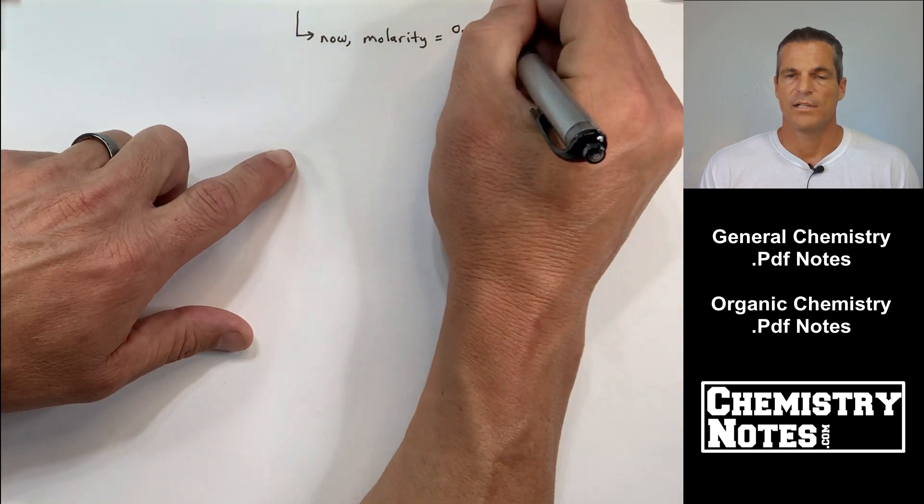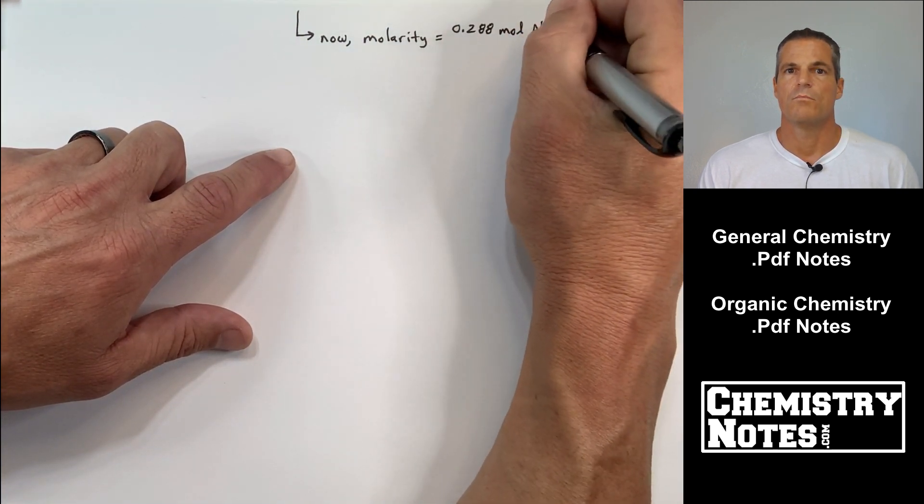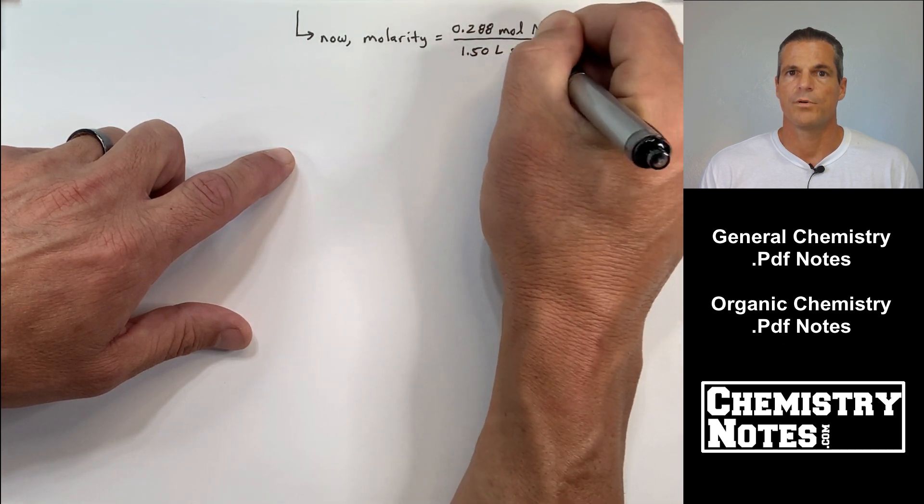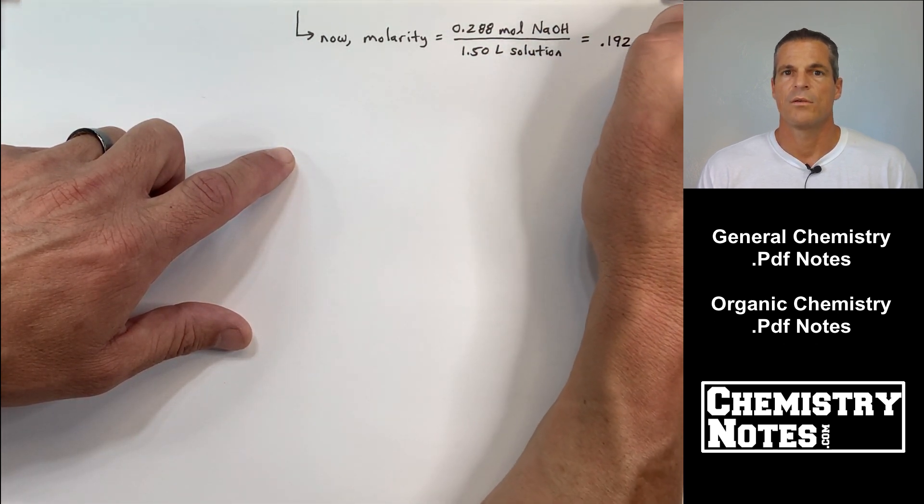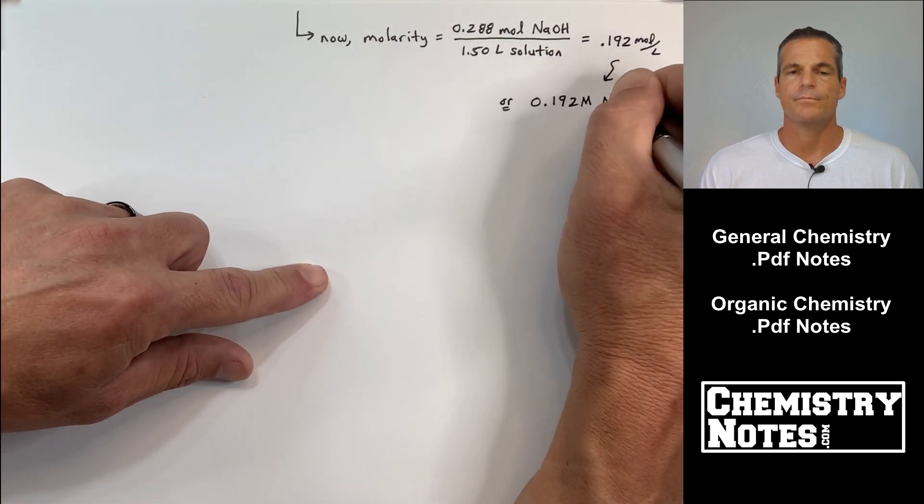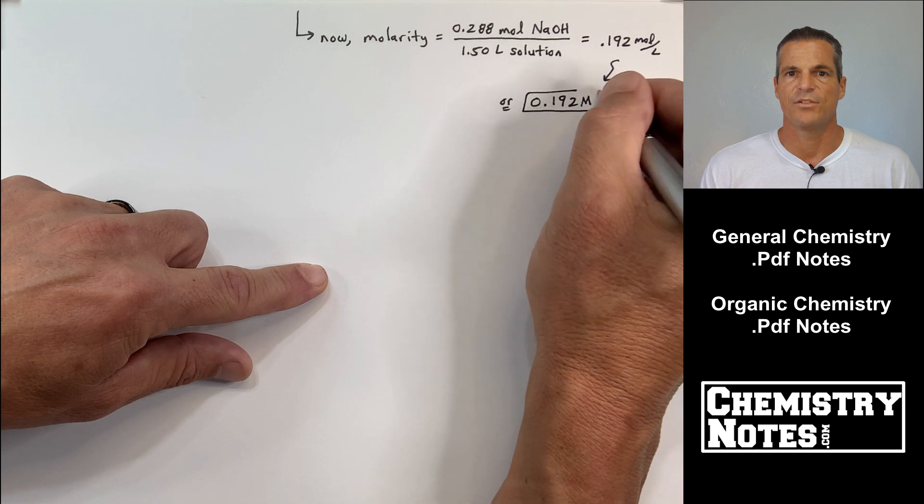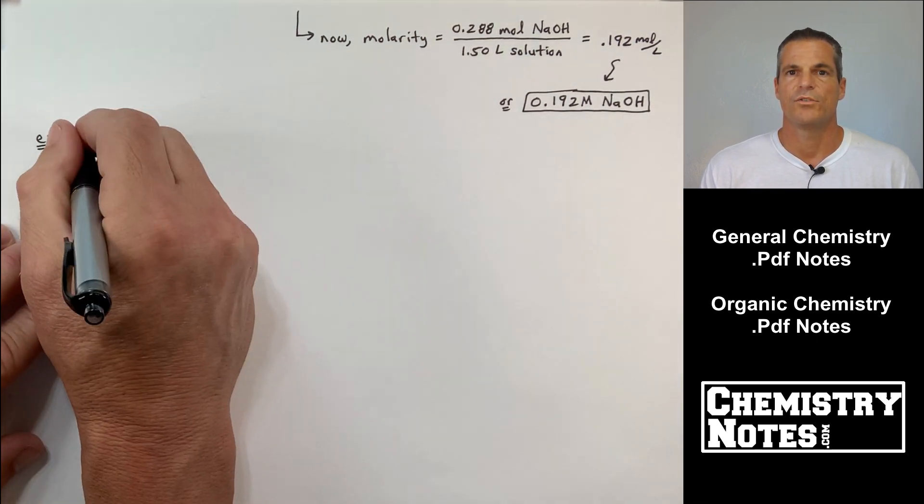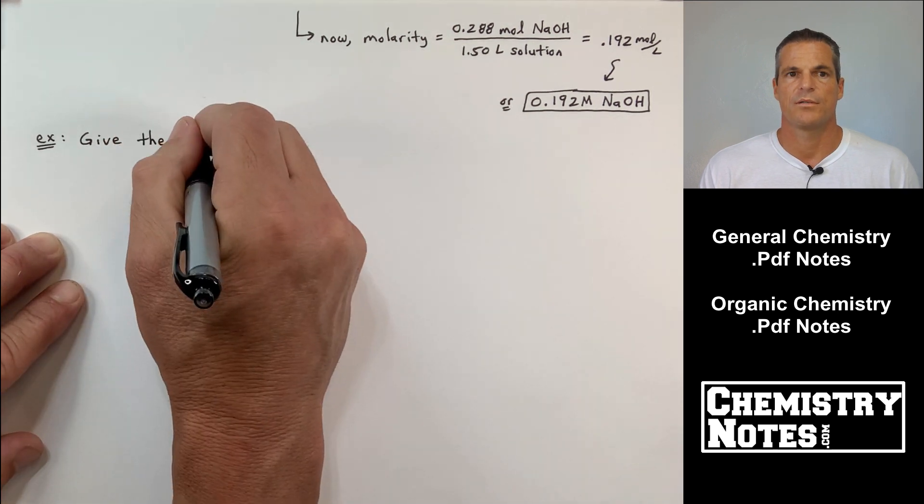Now, if you remember, molarity is moles per liter, moles of solute per liter of solution. We put the two together. We end up with 0.192 moles per liter, or 0.192 big M NaOH, 0.192 molar NaOH. All right, example number two for molarity.